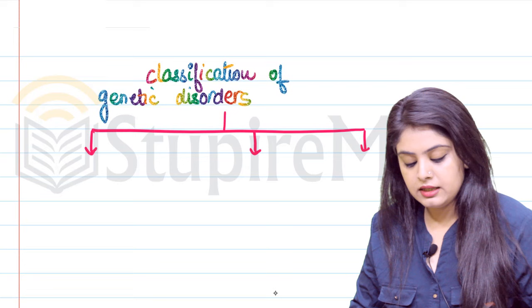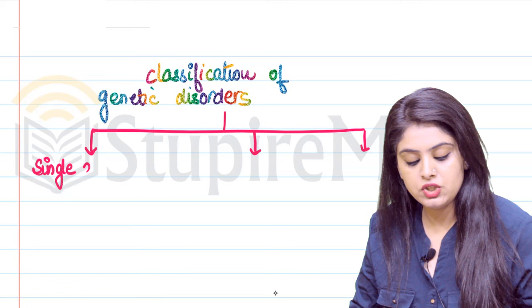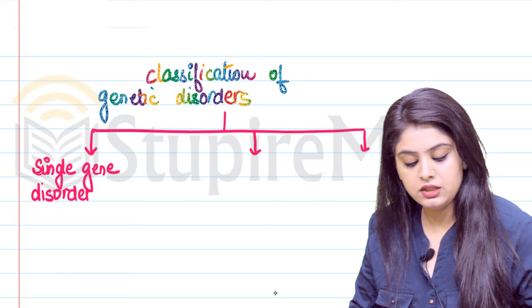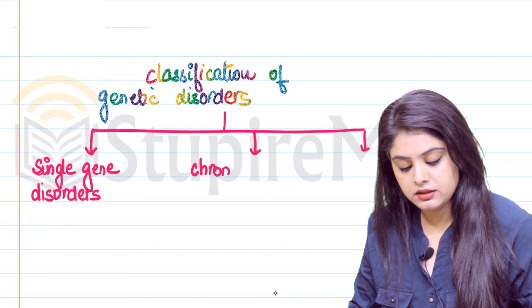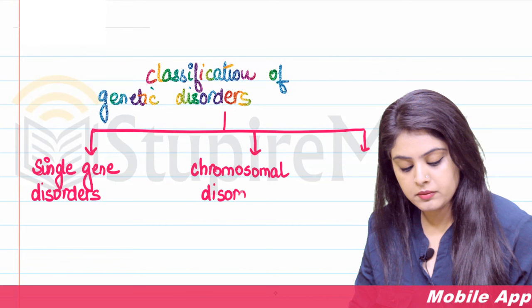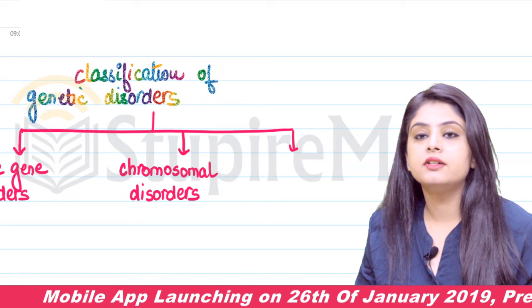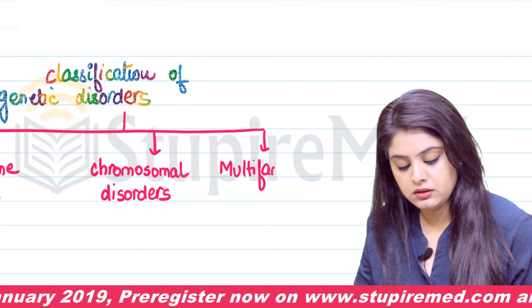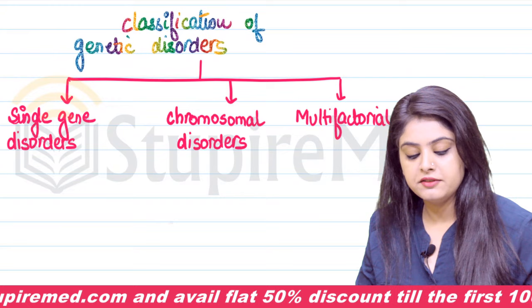The first one is referred to as single gene disorders. The second one is the very famous chromosomal disorders. So broadly we can classify genetic disorders into these three categories.